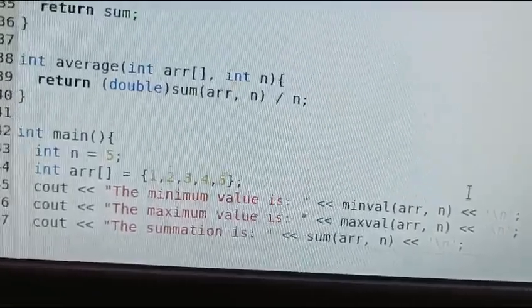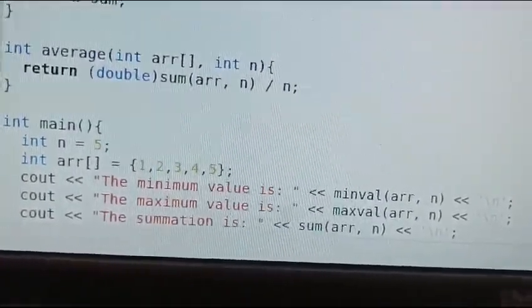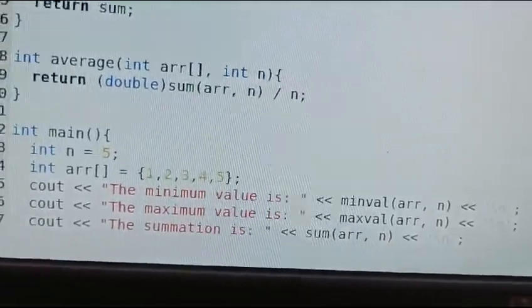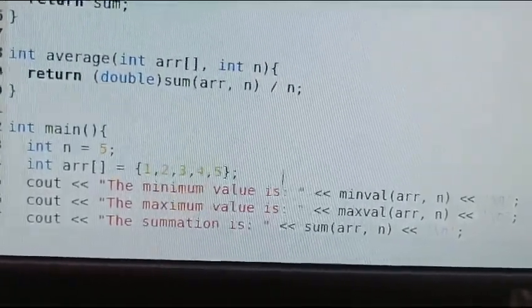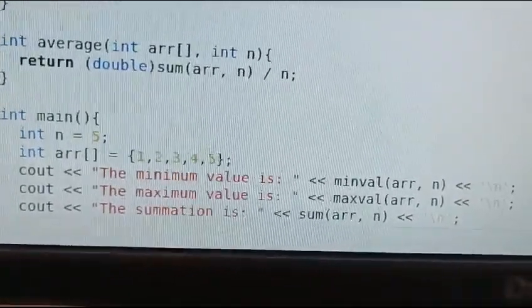Then we have printed using cout statement - the minimum value function is called, then maxval function is called, then the summation function is called.